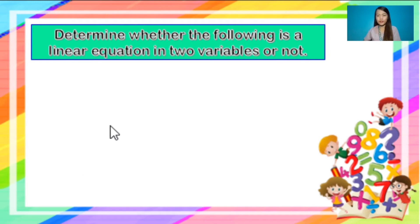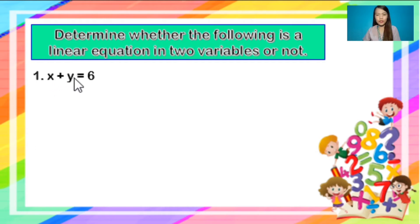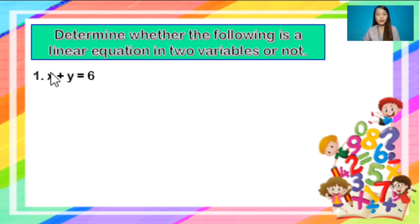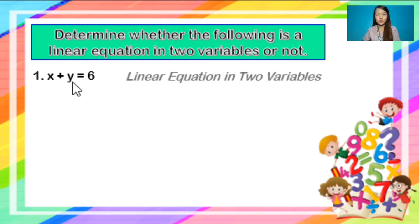Determine whether the following is a linear equation in two variables or not. Number 1: x plus y equals 6. This equation has two variables, x and y, and there is only one variable for each term. The exponent of the variables in each term is 1. There is no variable in the denominator, and also there is no variable inside a radical sign. Therefore, this is a linear equation in two variables.